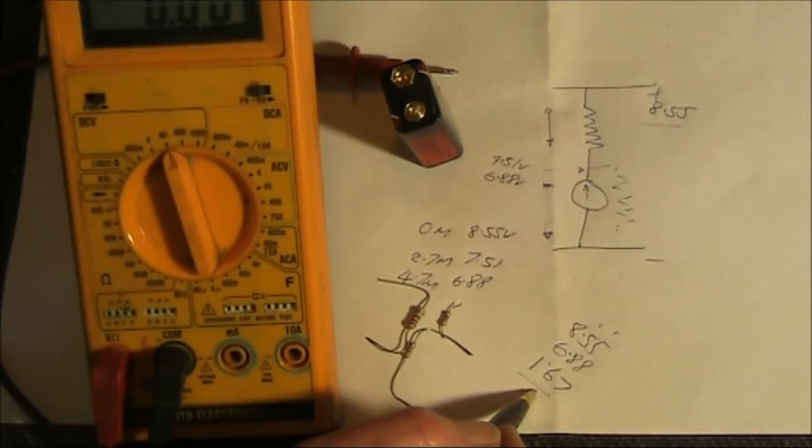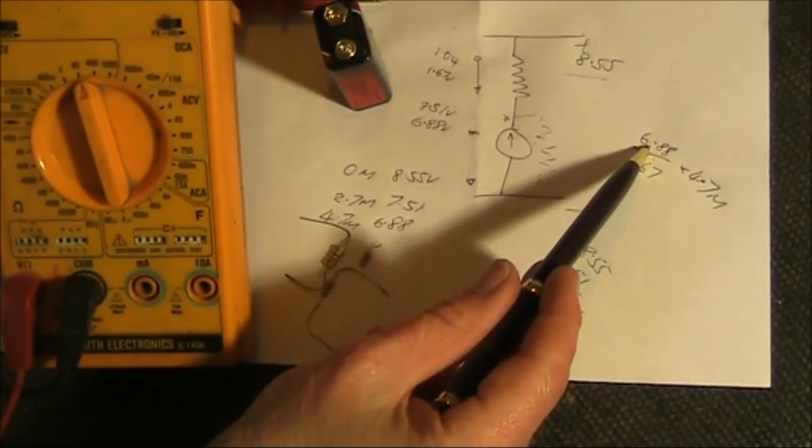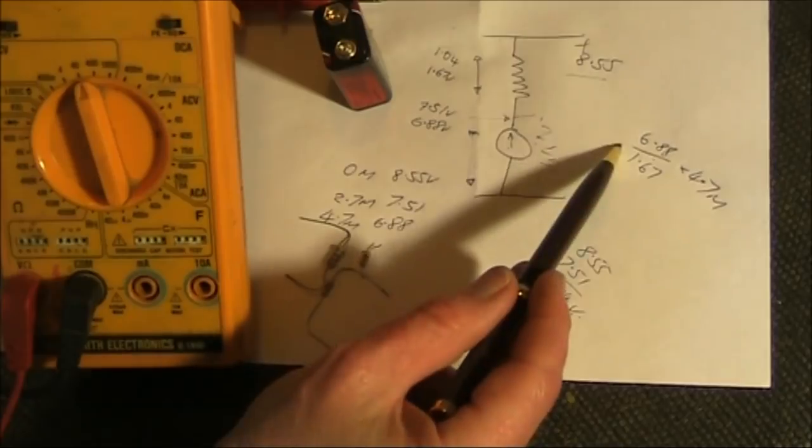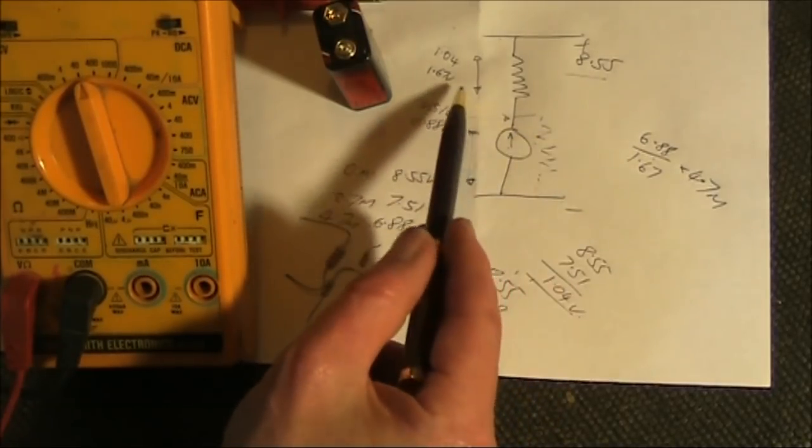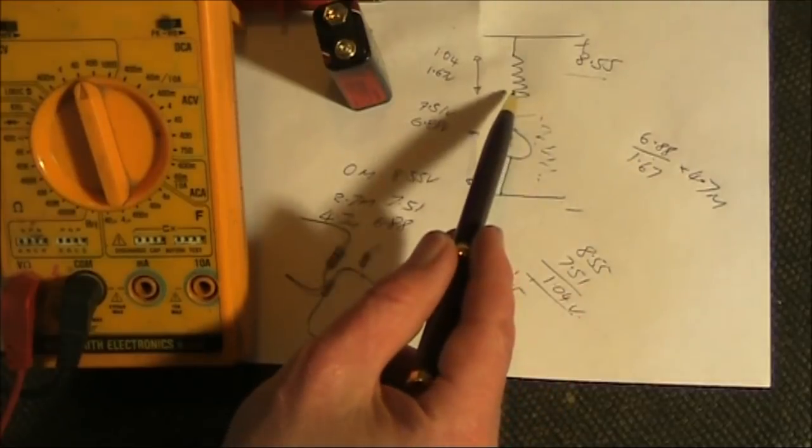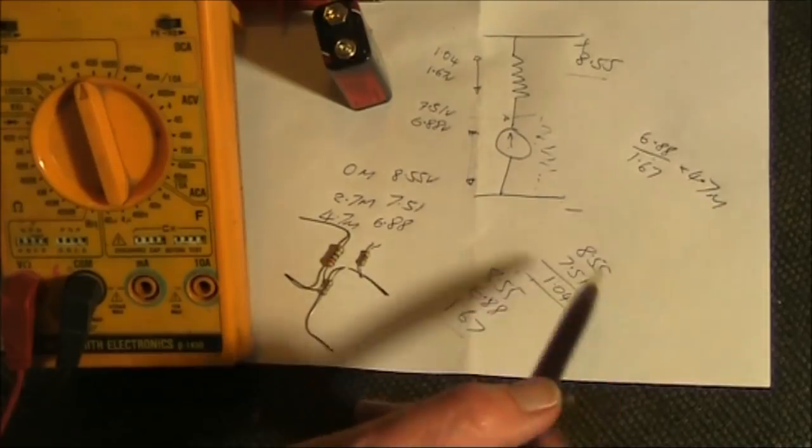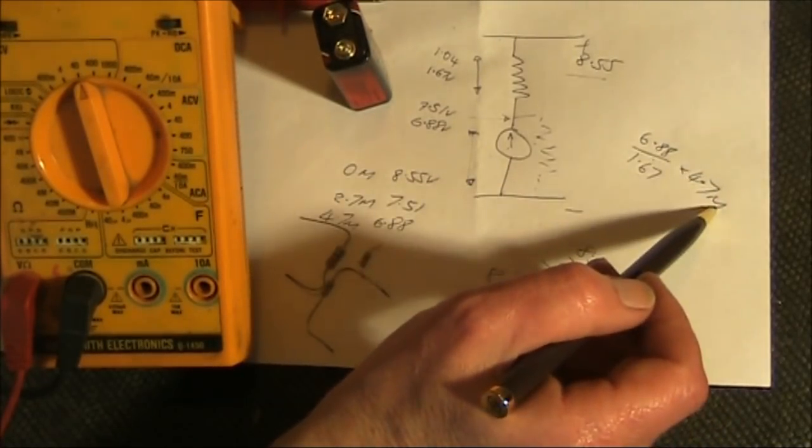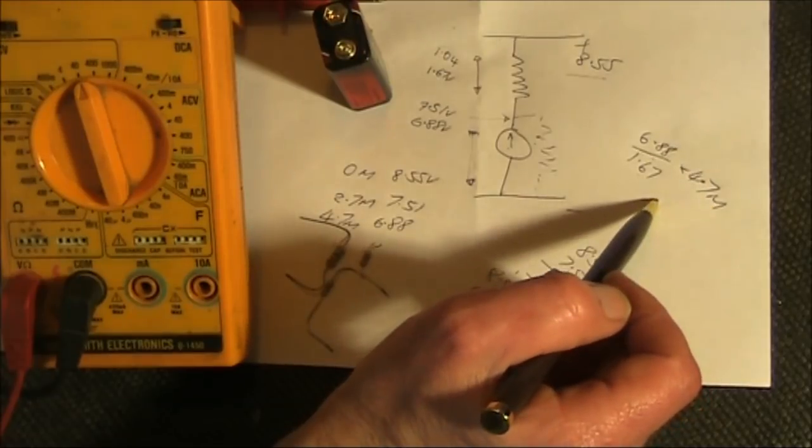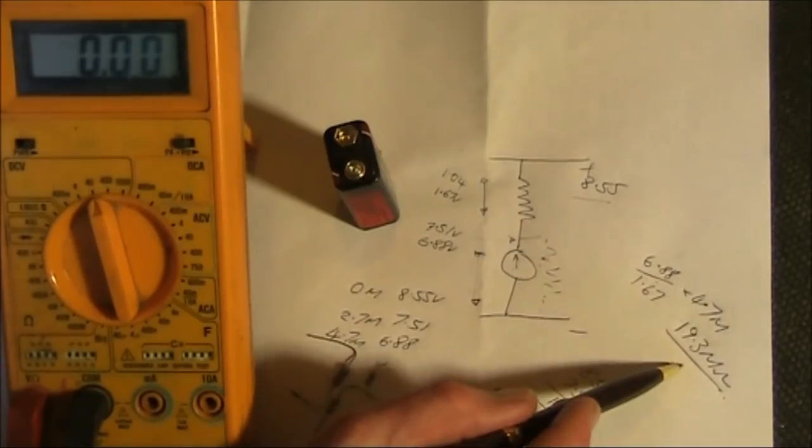What we do is 6.88 volts across the meter. We know that because that's what we're measuring. 1.67 volts, the voltage across our known 4.7 meg resistor. This forms a ratio. We multiply it by 4.7 meg, and that gives us the resistance of the meter. And that works out to be about 19.3 megohm.